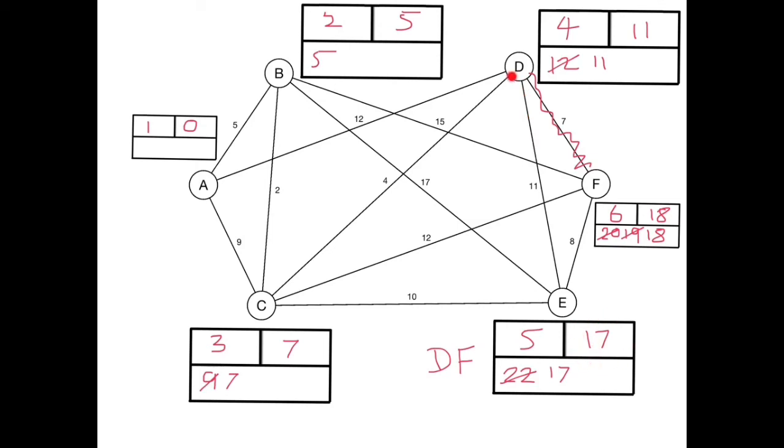But 11 minus 4 is 7. So that must be the arc that we've used so we must have done that one. So we went to C before that.